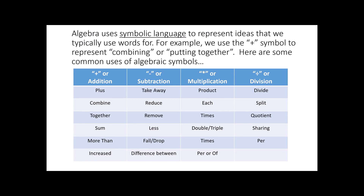Algebra uses a symbolic language to represent ideas we typically use words for. For example, we use the addition symbol — this plus symbol — to represent combining or putting together. But there are lots of other words that mean combining or putting together. The more familiar we are with those words, the easier problem-solving becomes. Here are some very simple, common algebra symbols. The plus sign can be represented by the words: plus, combined, together, sum, more than, or increasing. In every situation, it's always taking one thing and combining it with something else.